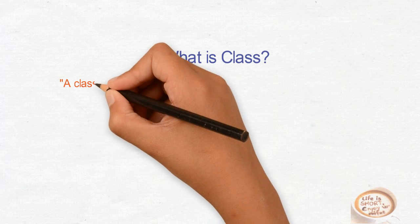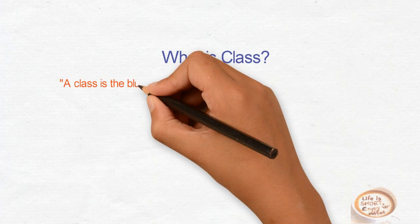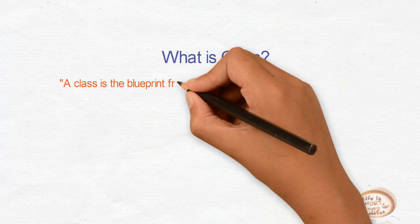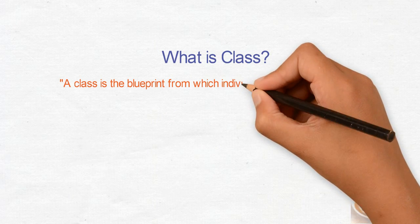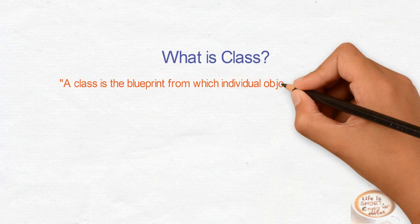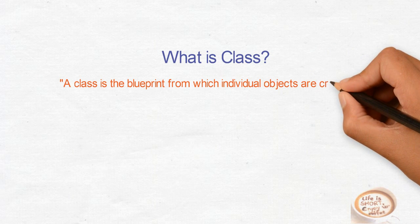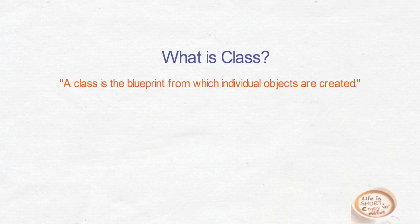Move on to what is class. A class is a blueprint from which individual objects are created. Yes, it is the definition you will read everywhere. Let's try to understand it more.